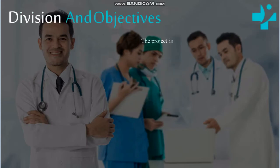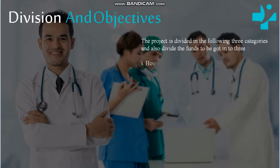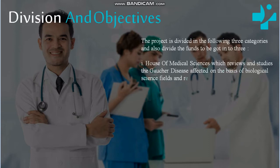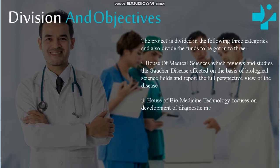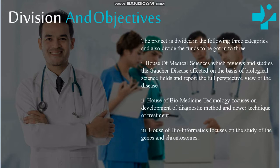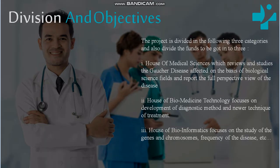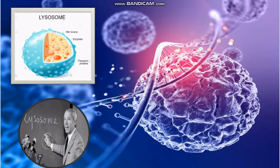The project is divided into three categories with funds allocated accordingly: (1) House of Medical Sciences, which reviews and studies Gaucher disease from biological science fields and reports the full perspective view of the disease; (2) House of Biomedicine Technology, which focuses on development of diagnostic methods and newer treatment techniques; (3) House of Bioinformatics, which focuses on the study of genes, chromosomes, and frequency of the disease.